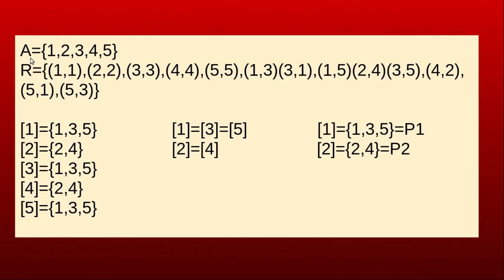Consider the set A = {1, 2, 3, 4, 5} with the equivalence relation R. The equivalence class of 1 is the set of all elements related to 1. Since 1 is related to 1, 1 is related to 3, and 1 is related to 5, the equivalence class of 1 is {1, 3, 5}.